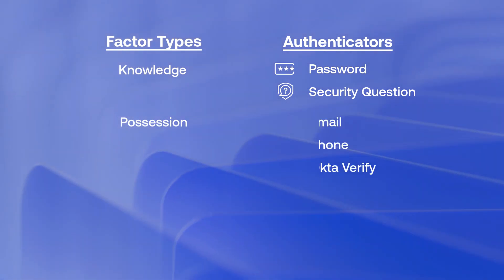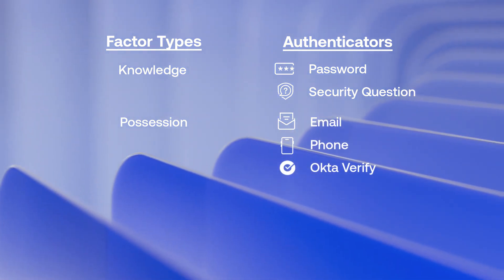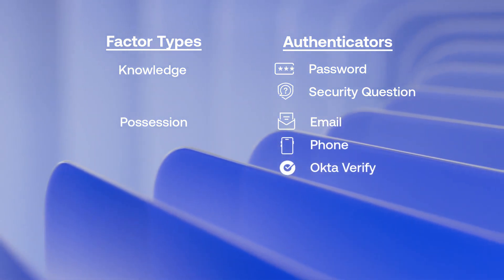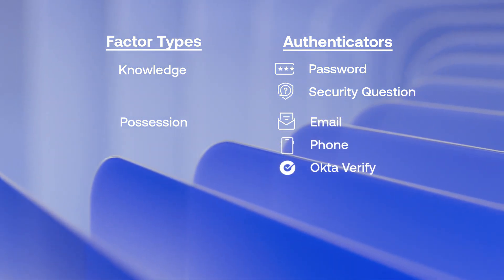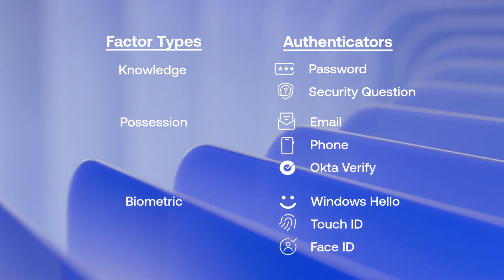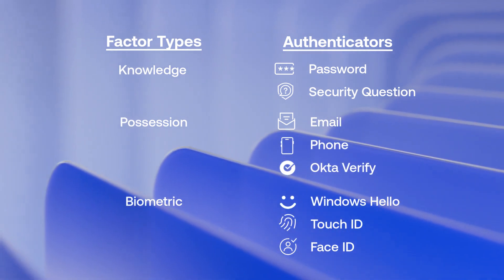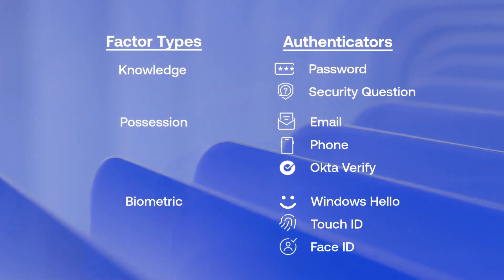Possession factor types include email, phone, and Okta Verify. And biometric factor types focus on authenticators like Windows Hello, Touch ID, and Face ID.